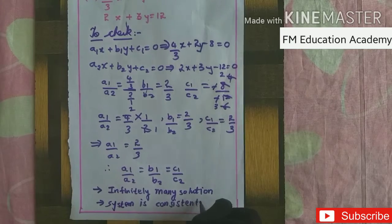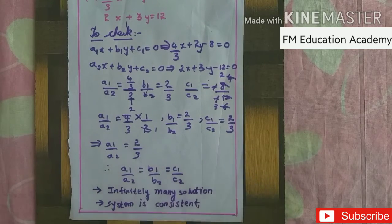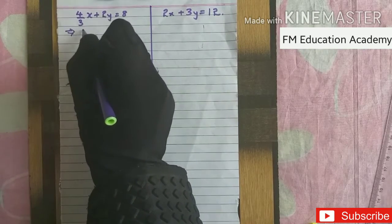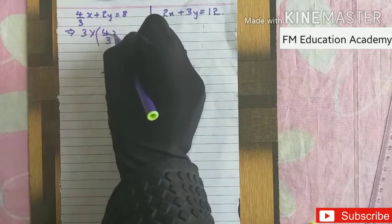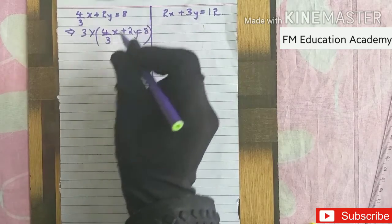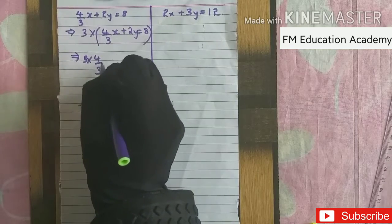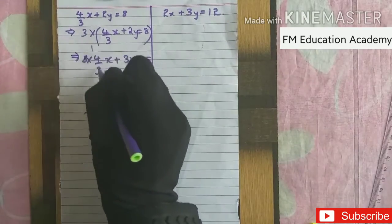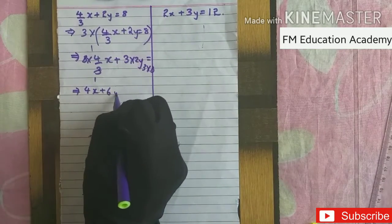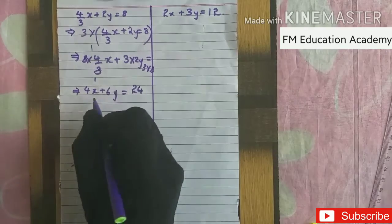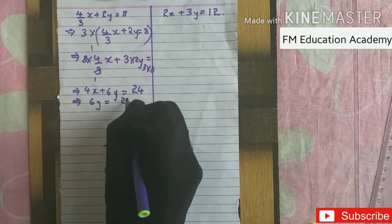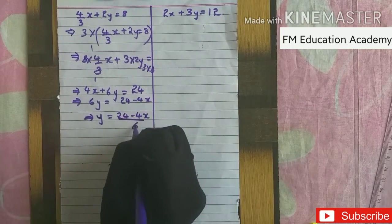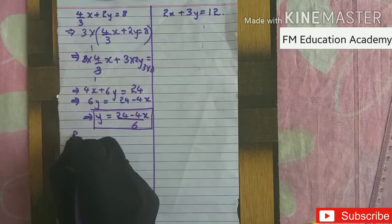Now we'll plot the points on a graph. For the first equation (4/3)x + 2y = 8, since there's a 3 in the denominator, we multiply both sides by 3 to simplify. This gives 4x + 6y = 24. Rearranging for y: y = (24 − 4x)/6.